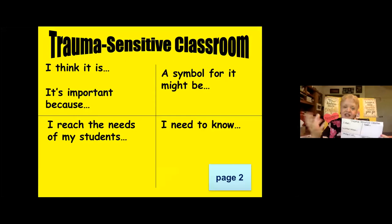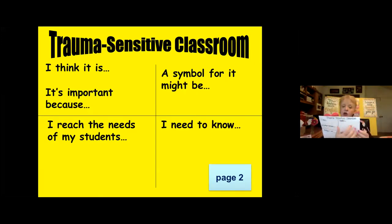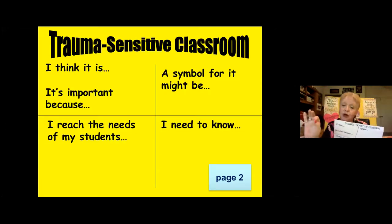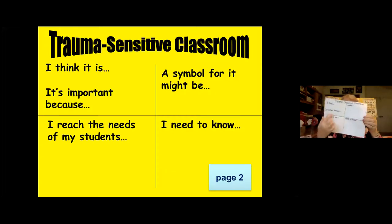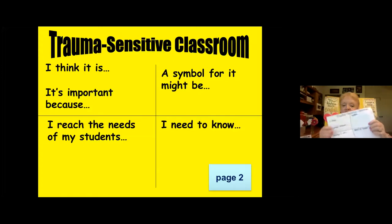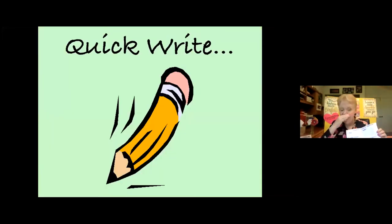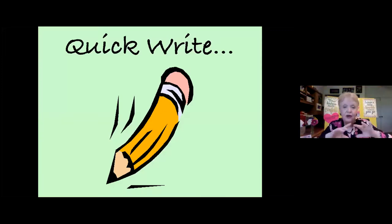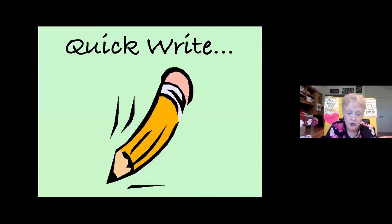You ask students various questions that tap into their learning styles — harvesting their background knowledge, because everybody has a different notion. In one quadrant, have them write and draw a symbol for what a trauma-sensitive classroom means to them. In another quadrant, what strategies have worked for you — sharing your own best practice. And in another quadrant, what are you curious about? What do you need to know? A quick-write activity is a great brain break for students.